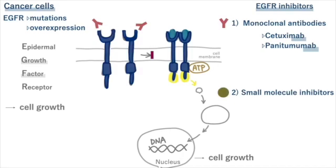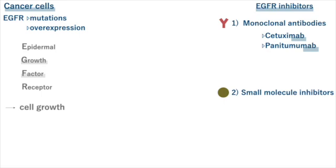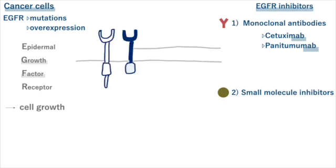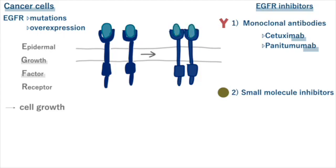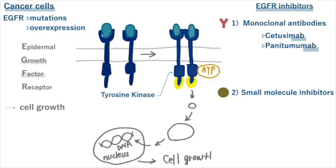On the other hand, small molecules target tyrosine kinases. When ligands bind to their extracellular domain, they trigger receptor dimerization, which then activates receptor tyrosine kinases using ATP. Tyrosine kinase inhibitors bind to tyrosine kinases, resulting in the blocking of downstream signal transduction.